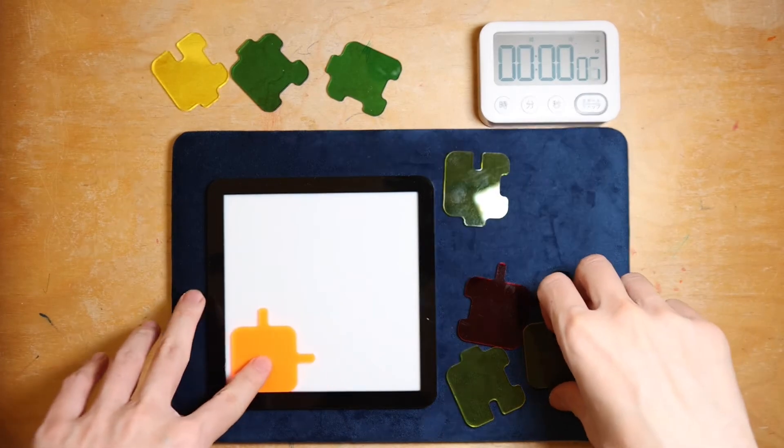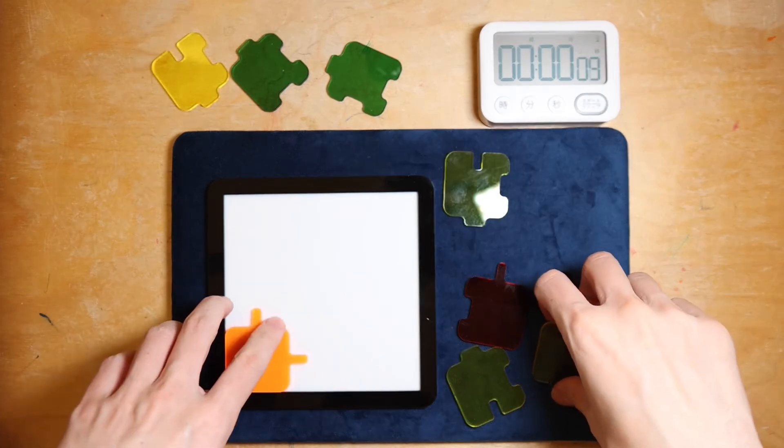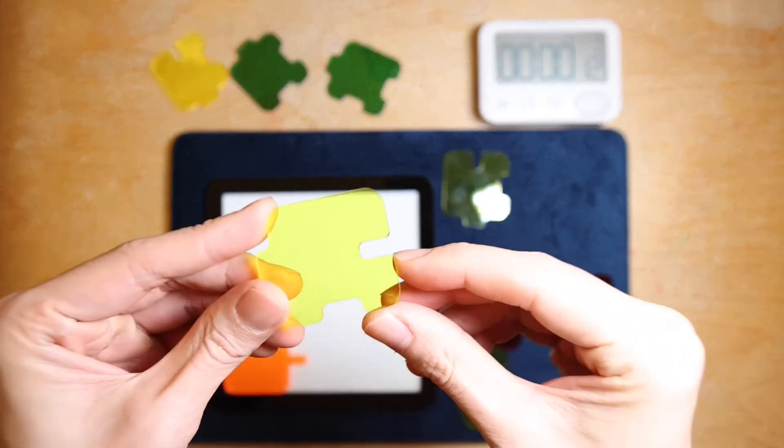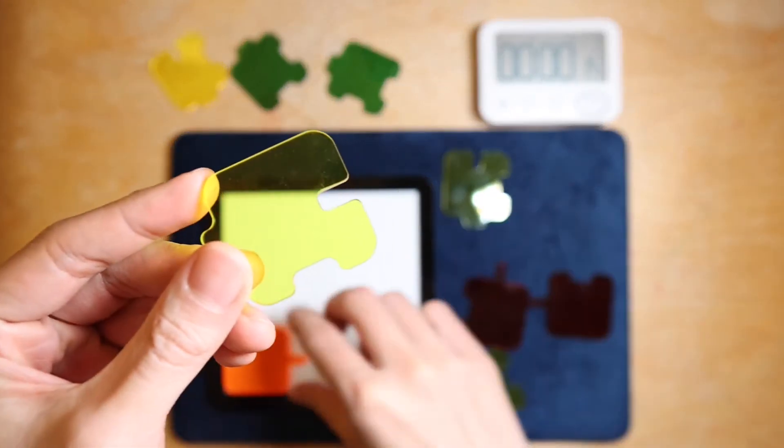So this orange piece here looks like a typical corner piece with two flat edges, so I'll try putting it on the bottom left corner.